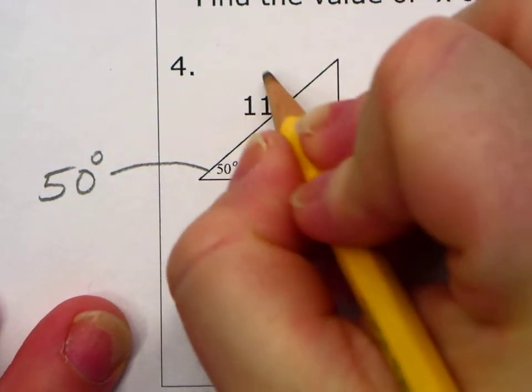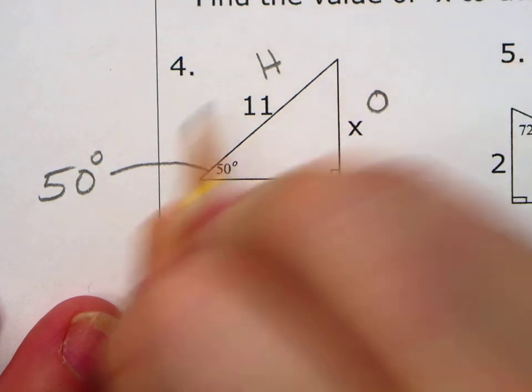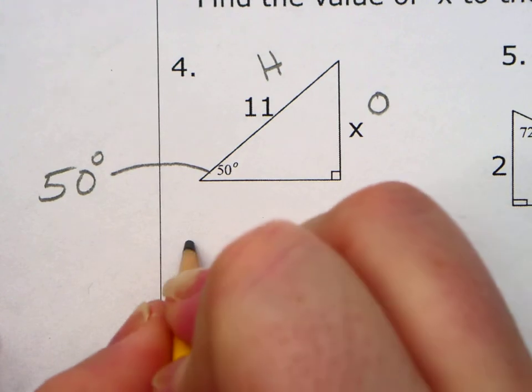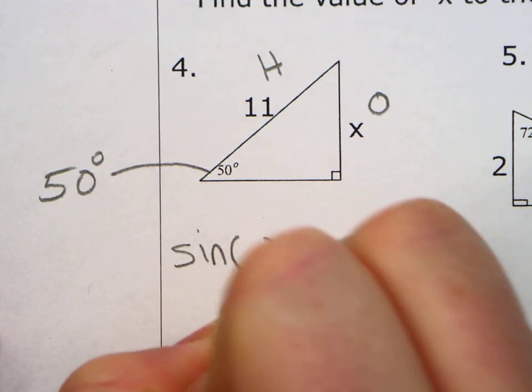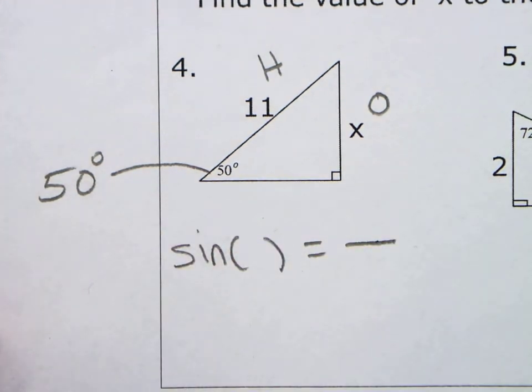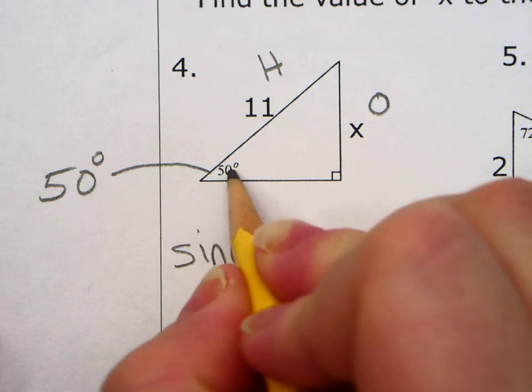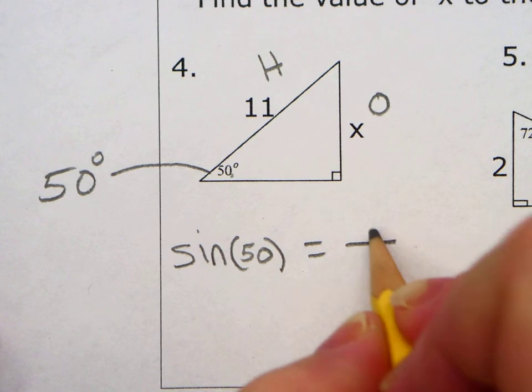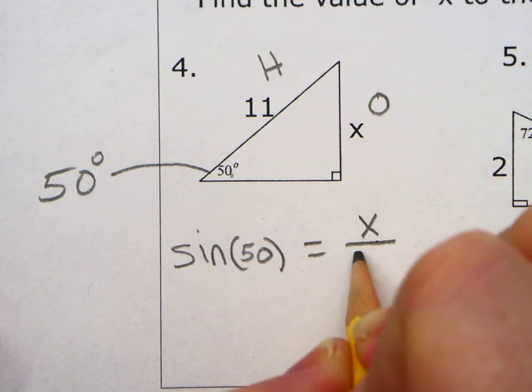I have my hypotenuse, and I have my opposite. So O and H is what? That's your sine. So sine of equals. Sine of what? 50 inside the triangle, inside the parentheses. What goes on top? X over 11.